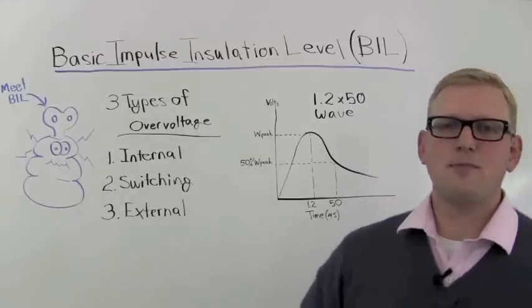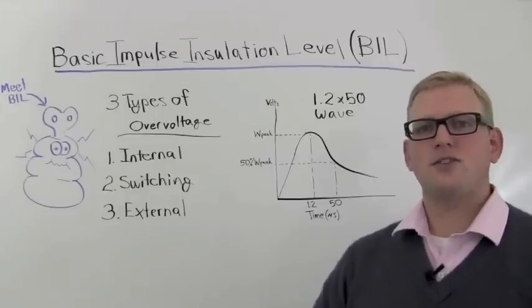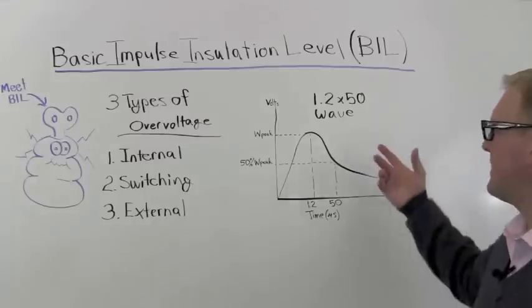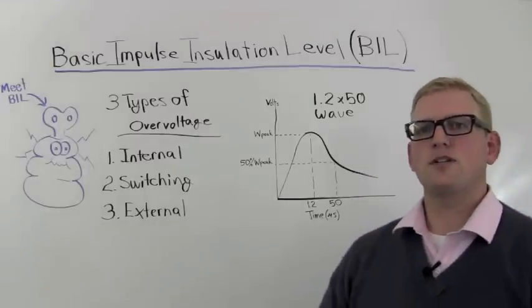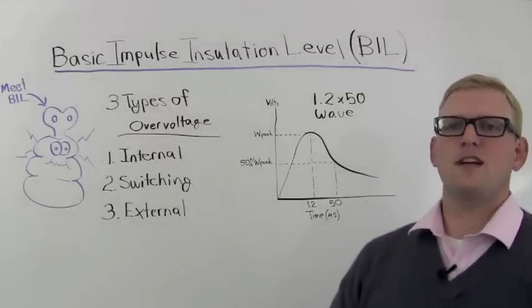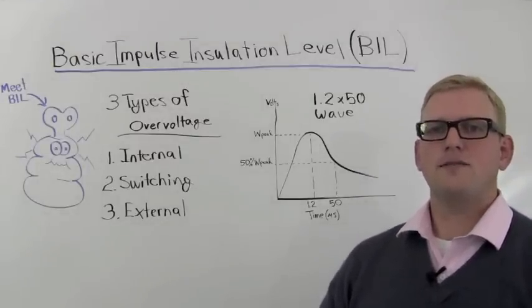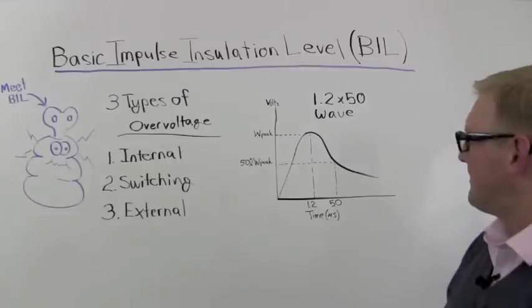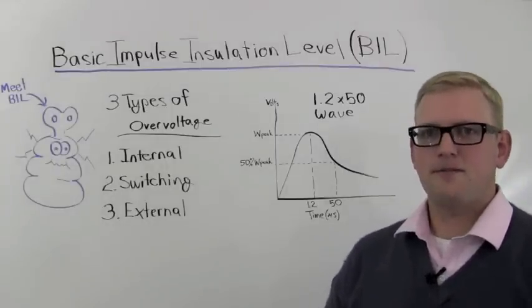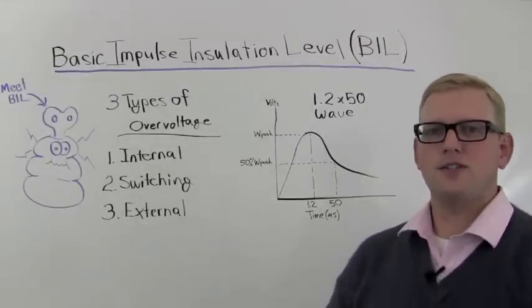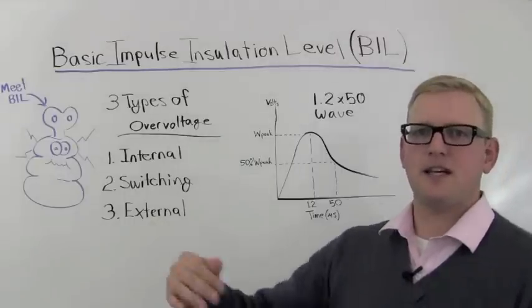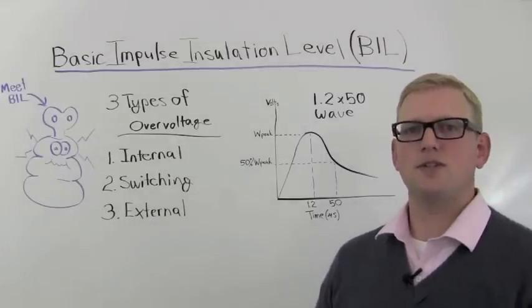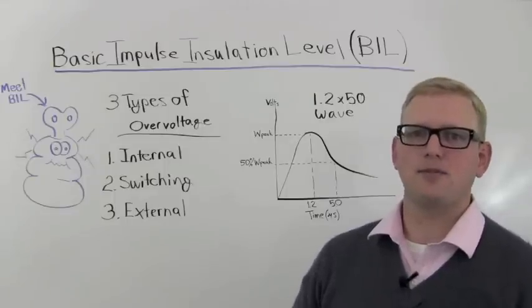To give you an example of what a surge or transient looks like in terms of a wave, I have illustrated here an example of a 1.2 by 50 wave, which is the standard waveform of a transient or voltage surge. It has a very steep front, and the numbers come from the time at which the wave peaks and subsides to 50% of peak.